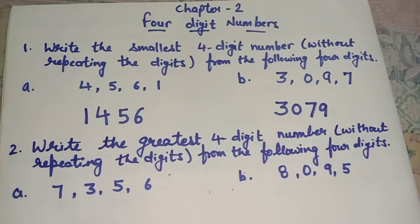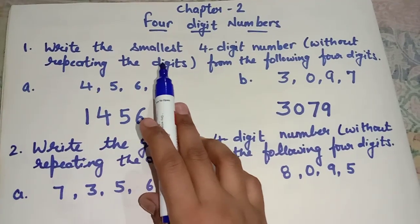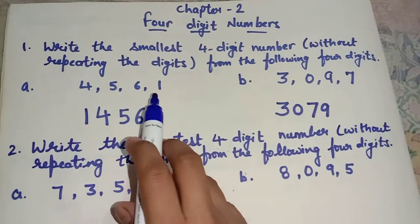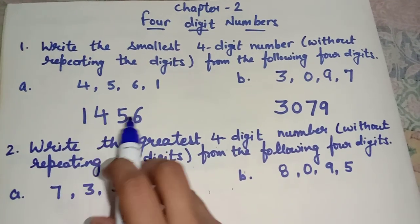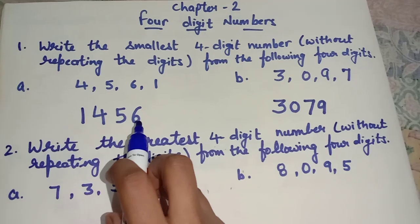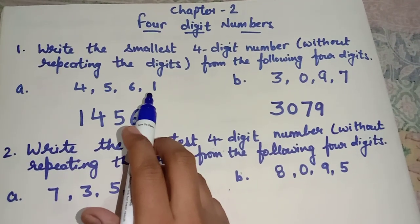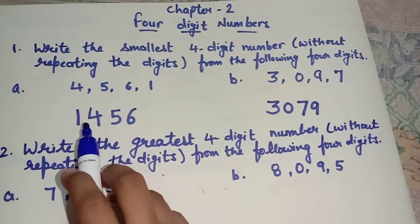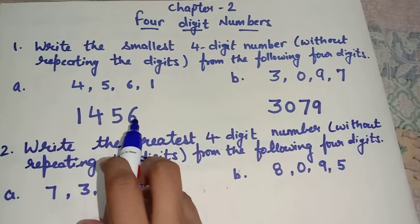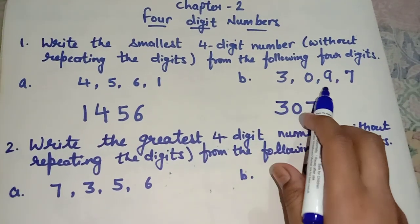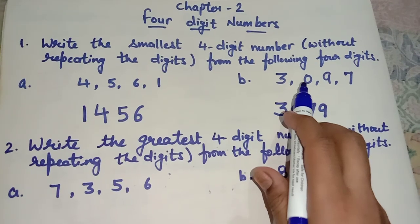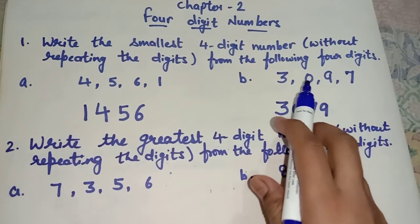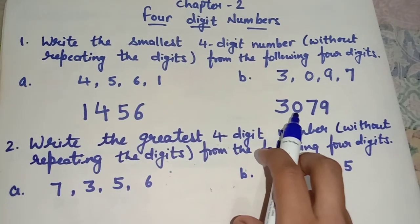So students, I explained in a previous video how to form the smallest 4-digit number without repeating the digits. We were given 4 separate digits and made the smallest 4-digit number by arranging them in ascending order — smallest to greatest. But when a 0 is given, we place 0 after the smallest digit in our arrangement.